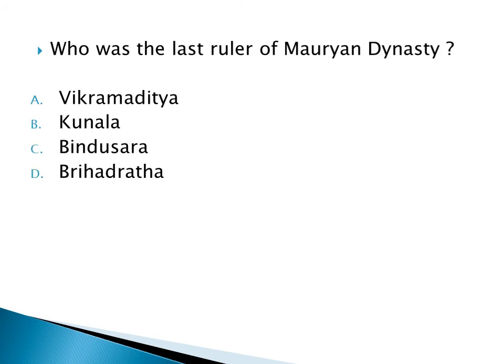Who was the last ruler of the Mauryan dynasty? Option A: Vikramaditya, Option B: Kunala, Option C: Bindusara, Option D: Brihadrata. The right answer is Option D: Brihadrata.